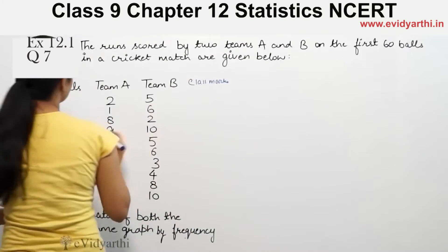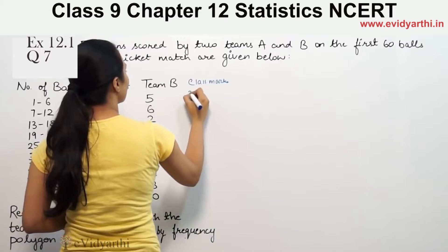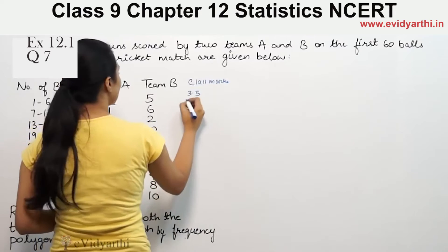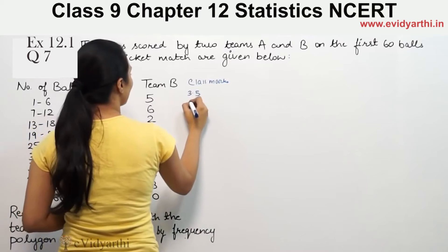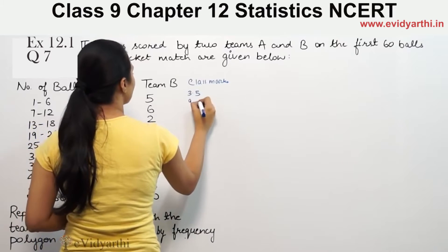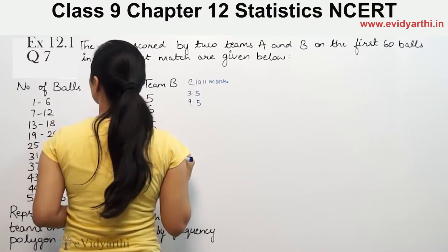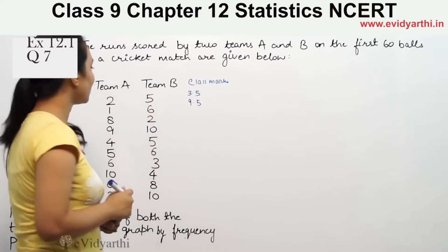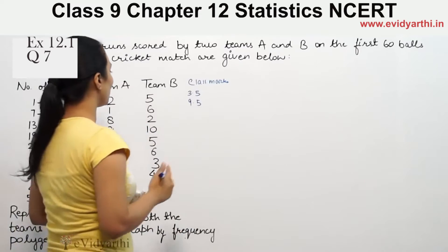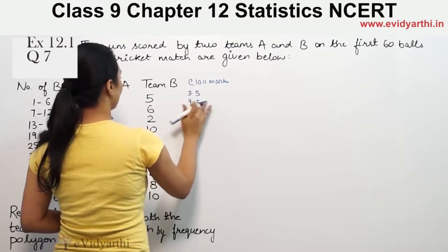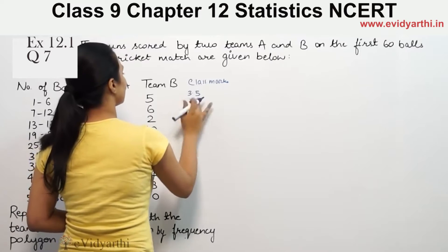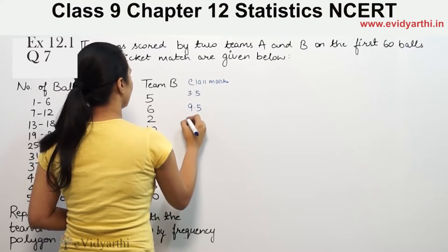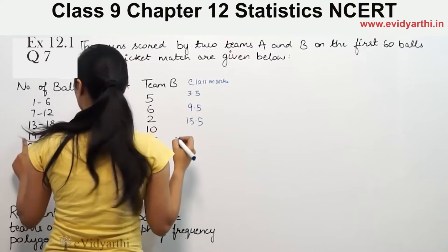So for the first interval, 1 plus 7 is 8 — wait, 1 plus 6 is 7, so 7 by 2 is 3.5. Then 7 plus 12 is 19, and 19 by 2 is 9.5. Then 13 plus 18 is 31, and 31 by 2 is 15.5.